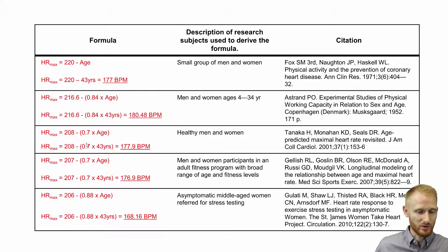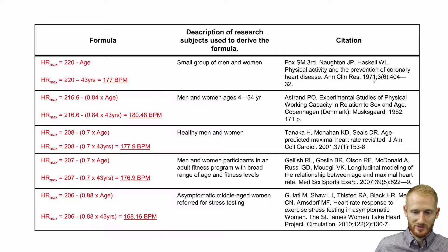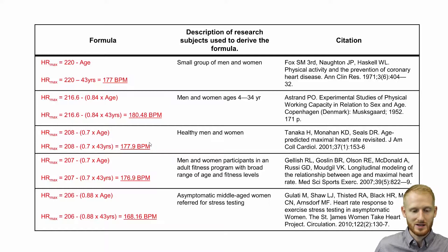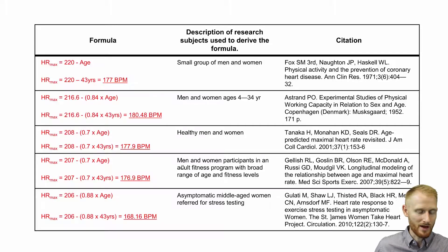A lot of people choose to use 208 minus 0.7 times age. It's newer compared to 220 minus age — the 220 formula is from 1971, while the 208 minus 0.7 times age is from 2001. From my understanding it's slightly more accurate, but they're almost the same number anyway, so it probably doesn't matter that much.